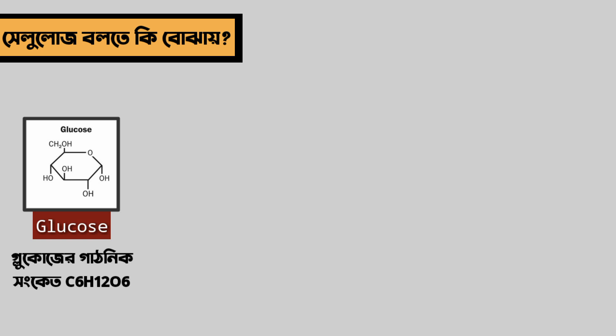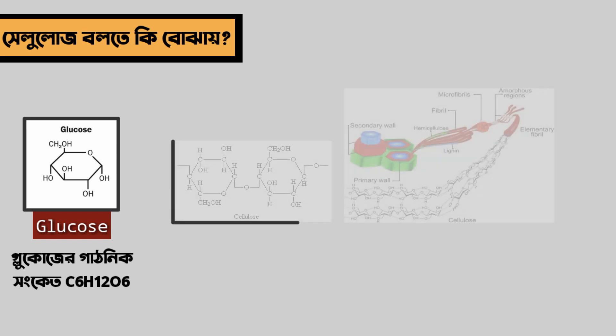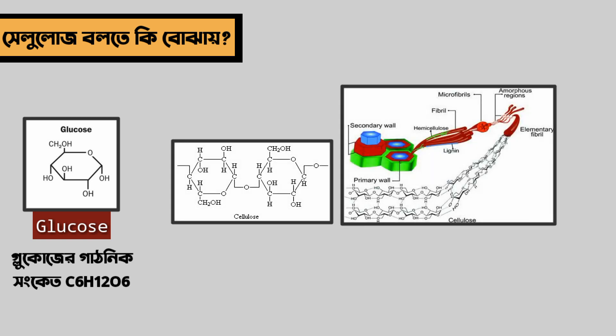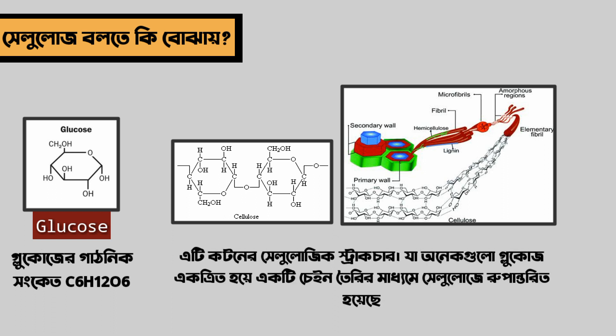The glucose formula is C6H12O6, so there is a 6-carbon structure. With the same carbon, we have a chain. On the screen there is a glucose chain. This is a cellulose structure, and here the glucose is an intestine component.